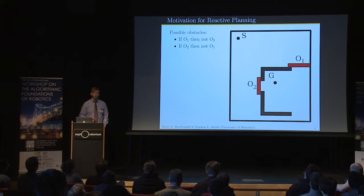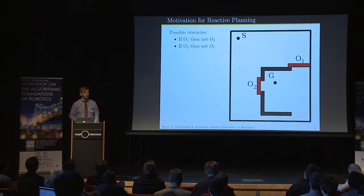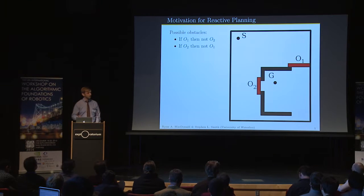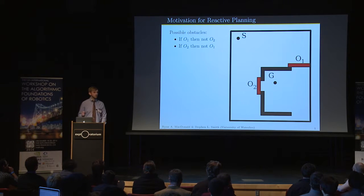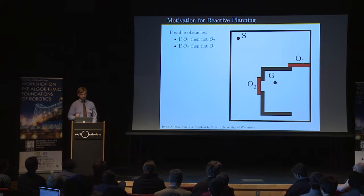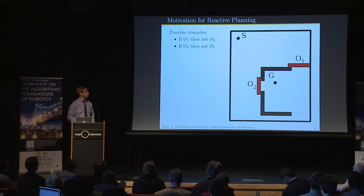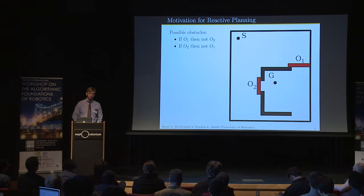I'd like to motivate our work first by a simple example where the robot starts at a position S and wants to move to a position G, but there's a set of obstacles in the way with certain constraints. If obstacle one exists and obstacle two does not, and if obstacle two exists and obstacle one does not.